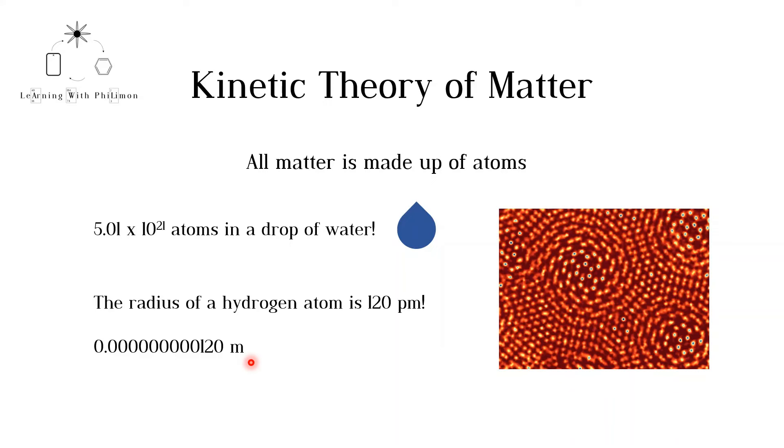Obviously, atoms cannot be seen with the naked eye. Nevertheless, modern technology, such as the scanning electron microscope, can help us visualize atoms. In this image from such a microscope from Cornell University, each dot is a molybdenum or sulfur atom.